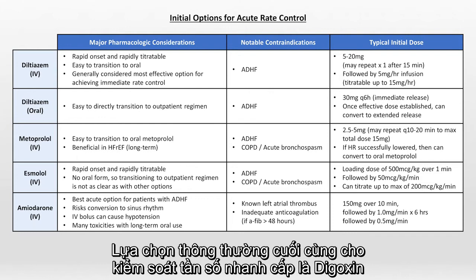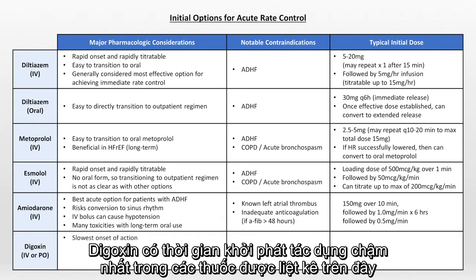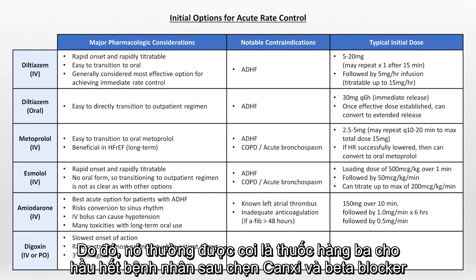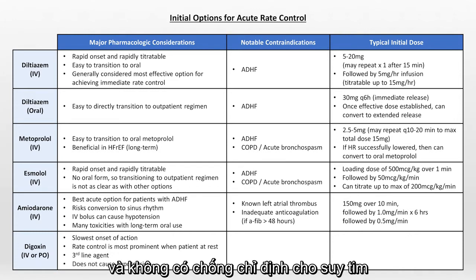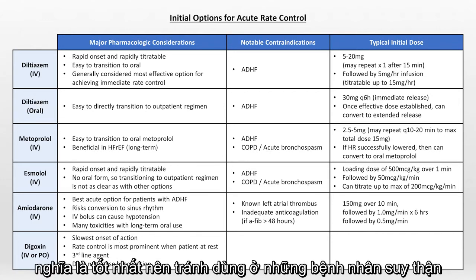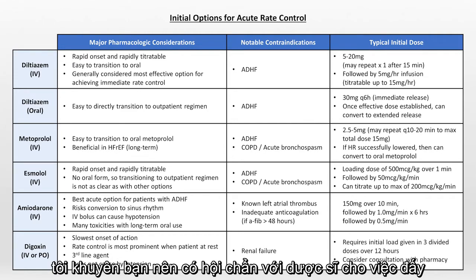The final conventional option for acute rate control is digoxin, which can be given by either IV or oral routes. Digoxin has the slowest onset of action of the medications listed, and rate control is most prominent only when the patient is at rest. Thus it's generally considered a third-line agent after calcium channel blockers and beta blockers, but it doesn't cause hypotension and is not contraindicated in heart failure. It is renally excreted with a relatively narrow therapeutic window, so it's best avoided in renal failure. Loading is usually done with three divided doses over 12 hours, with adjustments for renal function — consult a pharmacist.